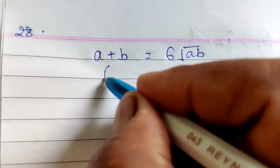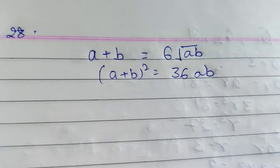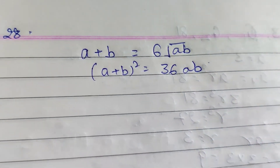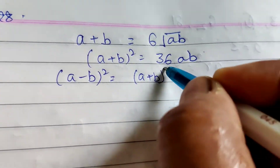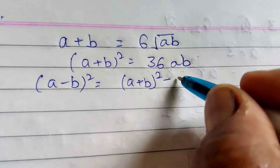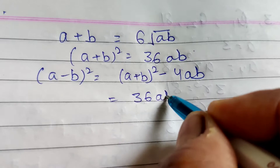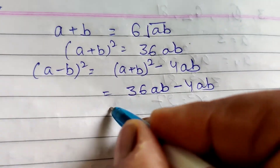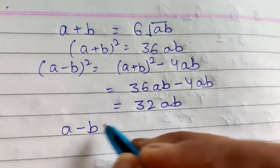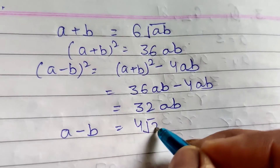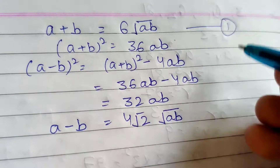Squaring both sides gives (a + b)² = 36ab. We find (a - b)² using the formula (a + b)² - 4ab, which equals 36ab - 4ab = 32ab. Therefore a - b equals 4√2 times root(ab). Labeling a + b = 6√(ab) as equation 1 and a - b = 4√2·√(ab) as equation 2.